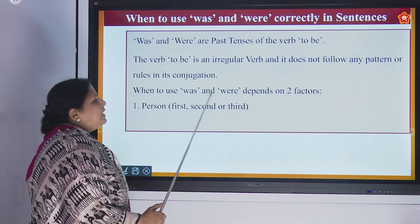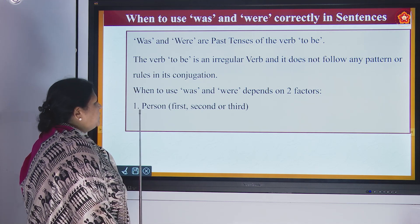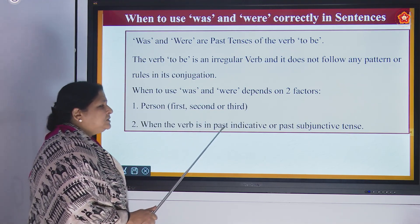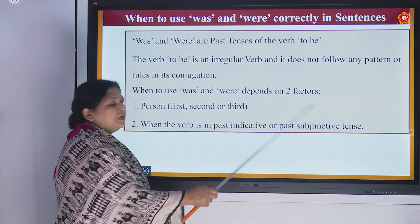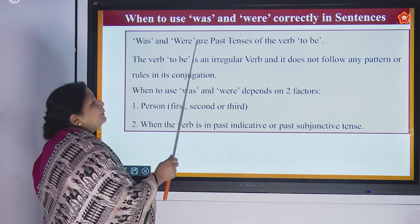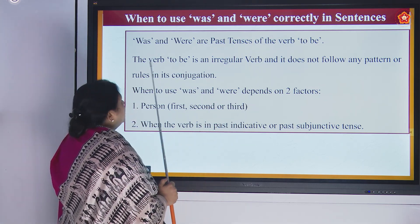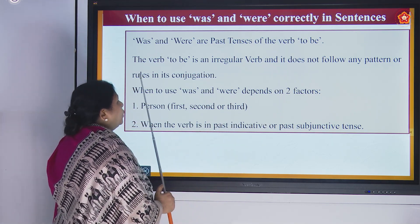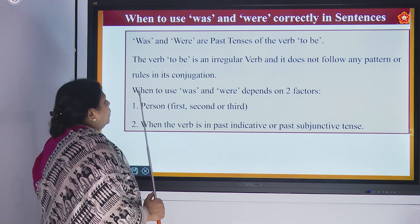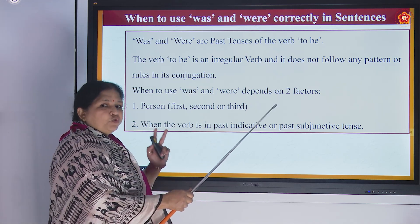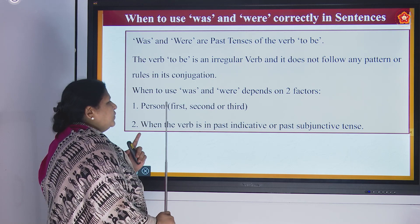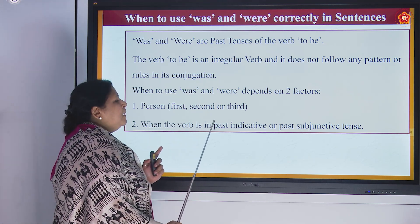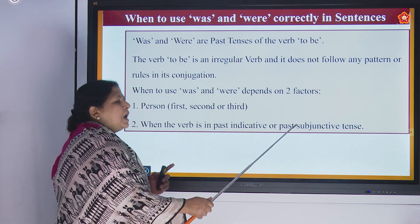When to use was and were depends on two factors. The first one is person — that is first person, second person, or third person. And the second is when the verb is in past indicative or past subjunctive tense.